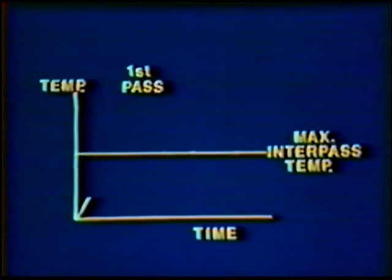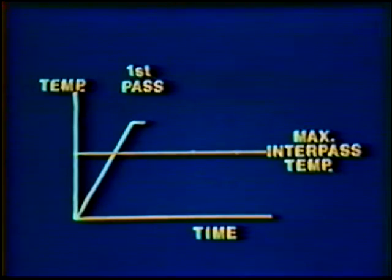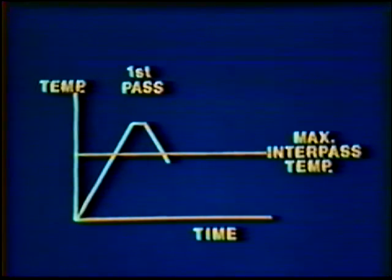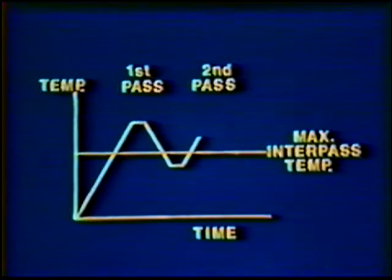The maximum temperature of the base metal between passes can be controlled to prevent holding the temperature at a point where carbide precipitation can occur. After each pass, the welder must wait, if necessary, until the temperature drops below the maximum interpass temperature prior to depositing the next pass.